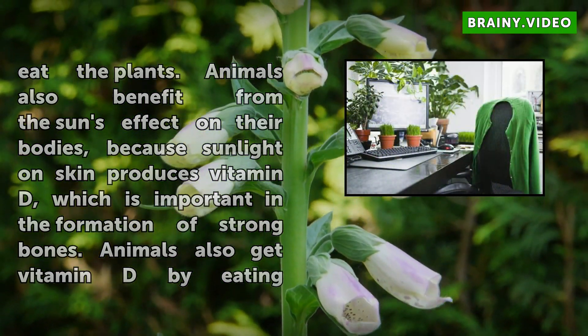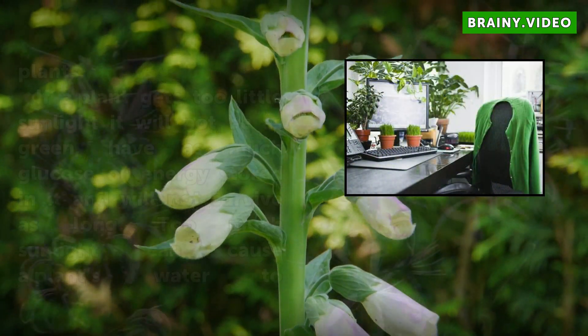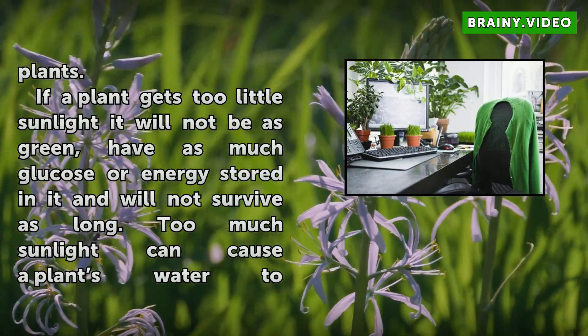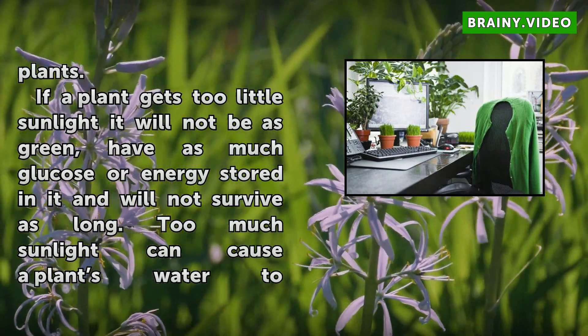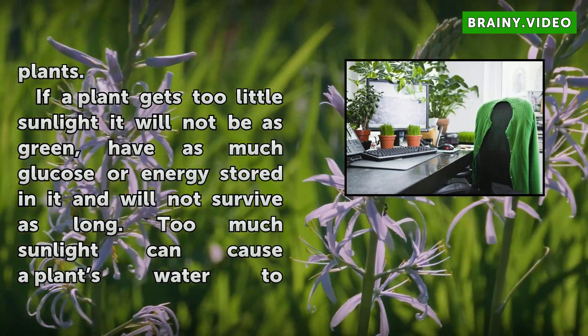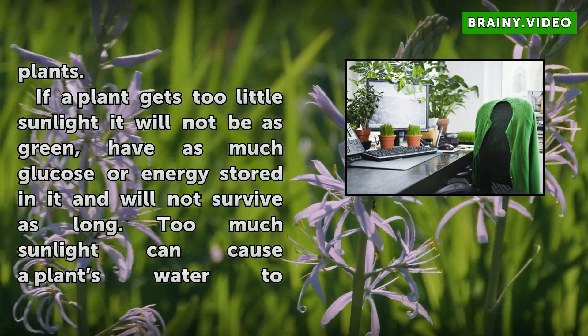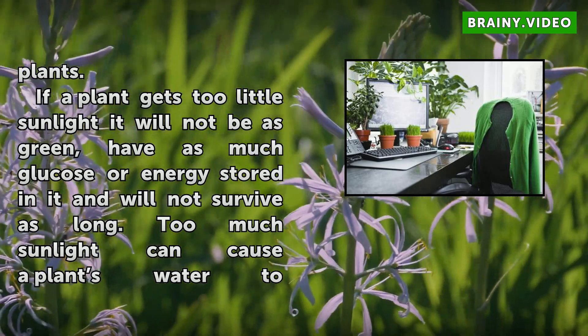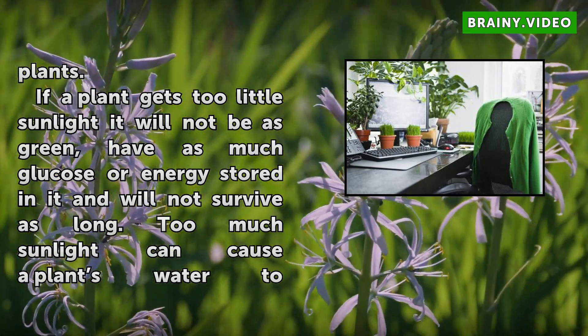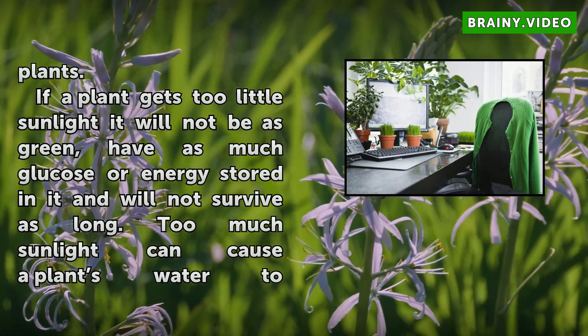If a plant gets too little sunlight it will not be as green, have as much glucose or energy stored in it, and will not survive as long. Too much sunlight can cause a plant's water to evaporate and lead to its death.